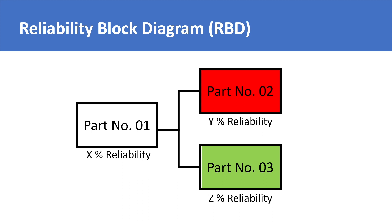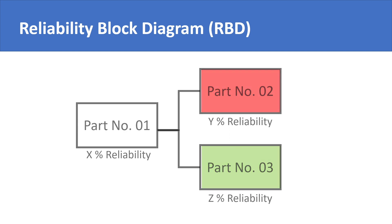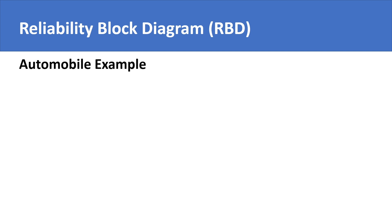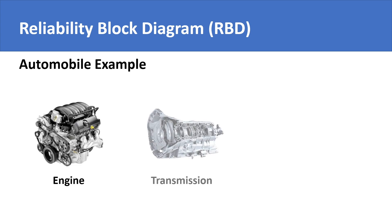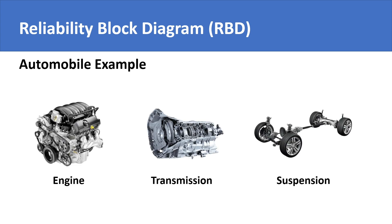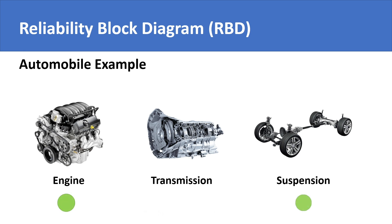The most obvious example of series configuration in reliability is that of an automobile. The engine, transmission, and suspension are all connected in series with each other from a reliability perspective, because failure of any one component causes failure of the automobile. Even if the engine and suspension are okay, but the transmission fails, the car can't be driven.